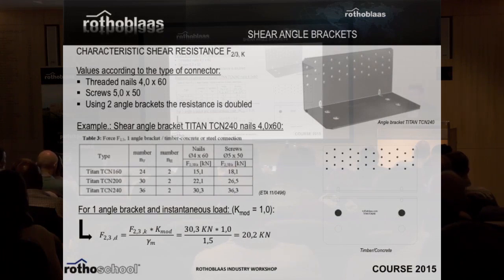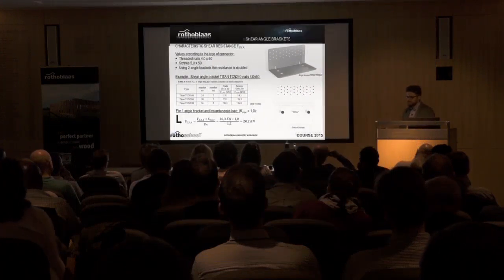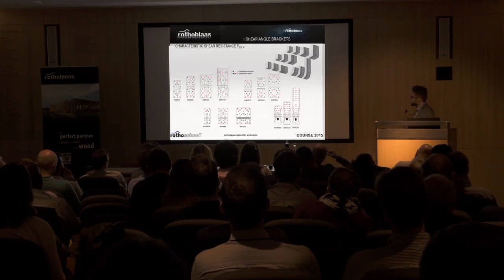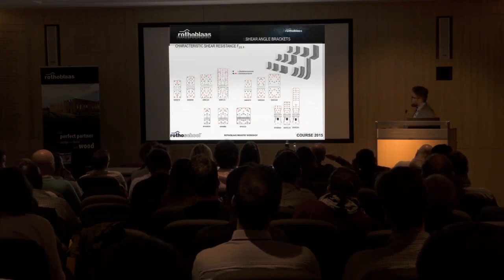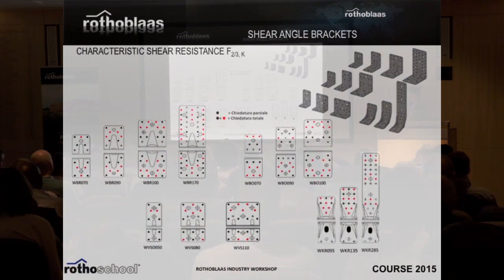This is an approach that the final designer cannot touch with their hands. But it is the only way nowadays, according to code, to find the final resistance. In the market there are many angle brackets — basically the difference is angle brackets working in shear and angle brackets working in tension, like a hold down.